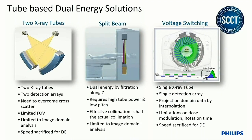The third approach is kV switching, where as you go around the patient, the tube voltage switches rapidly from high to low. It is a single tube and single detector array. The benefit is that you can do projection space decomposition after some interpolation. The limitations are that dose modulation tools are typically unavailable because switching voltage and current simultaneously is very difficult, and you need to slow down to complete all the switches per rotation — sacrificing speed for dual energy.